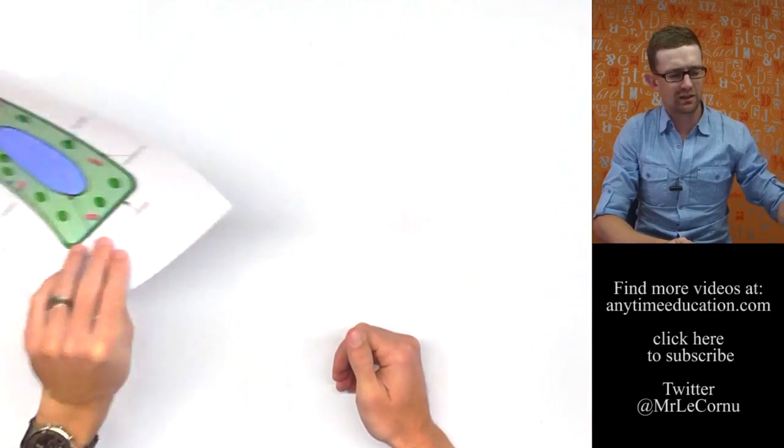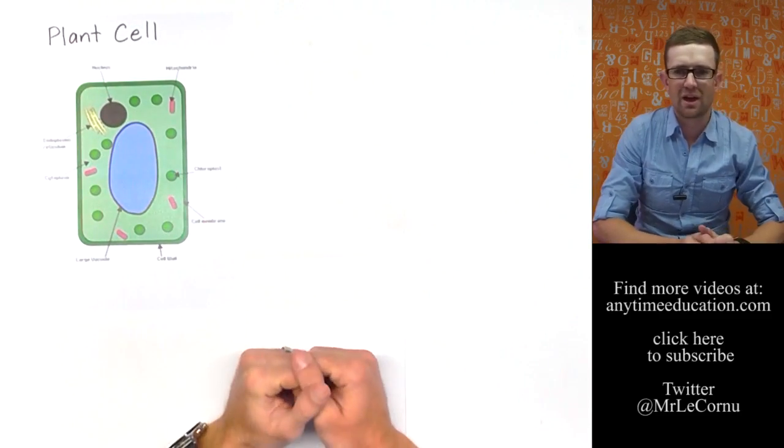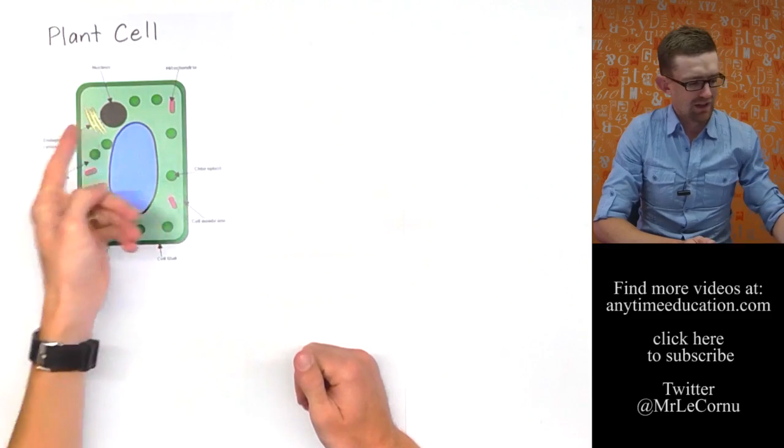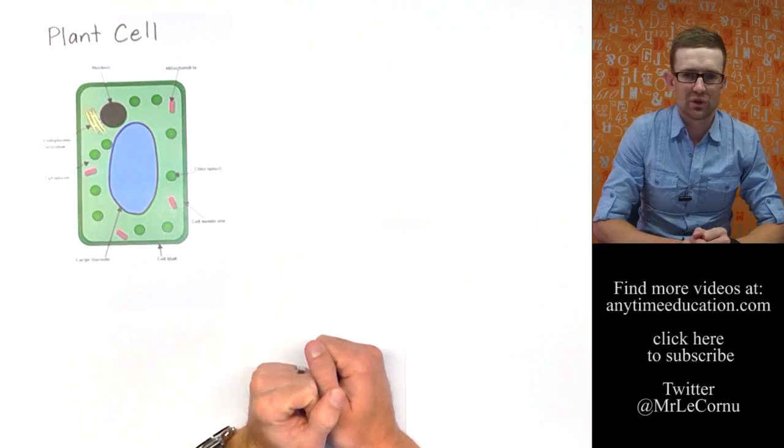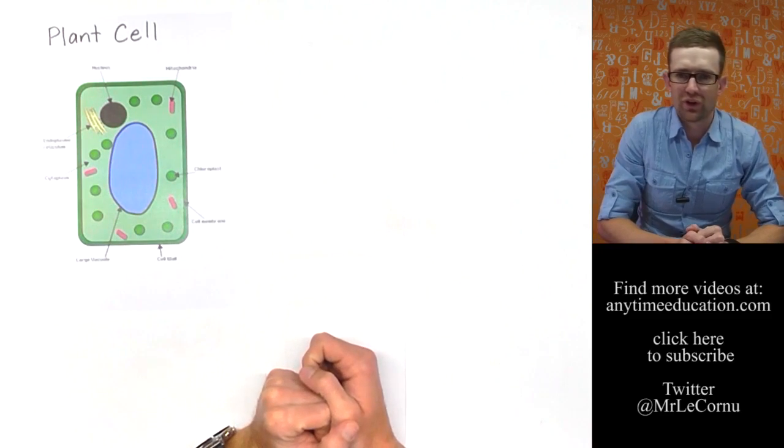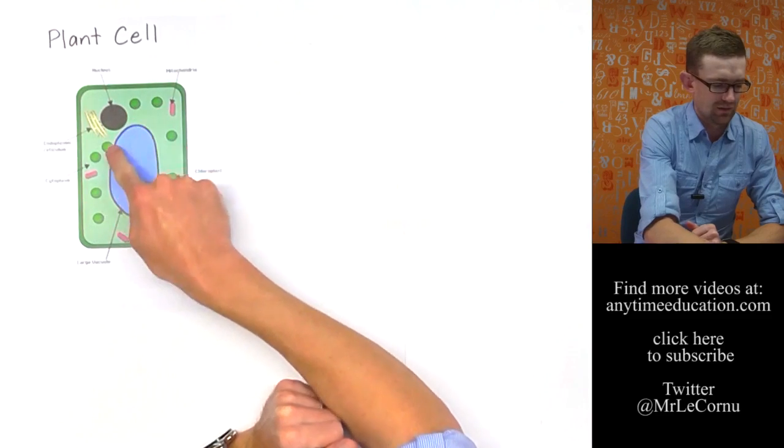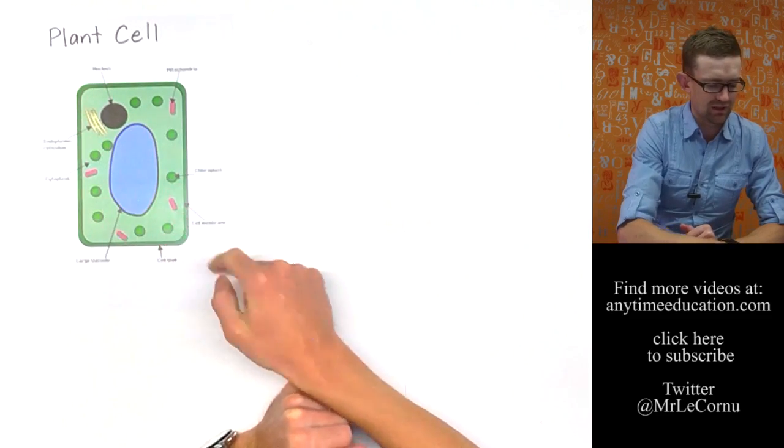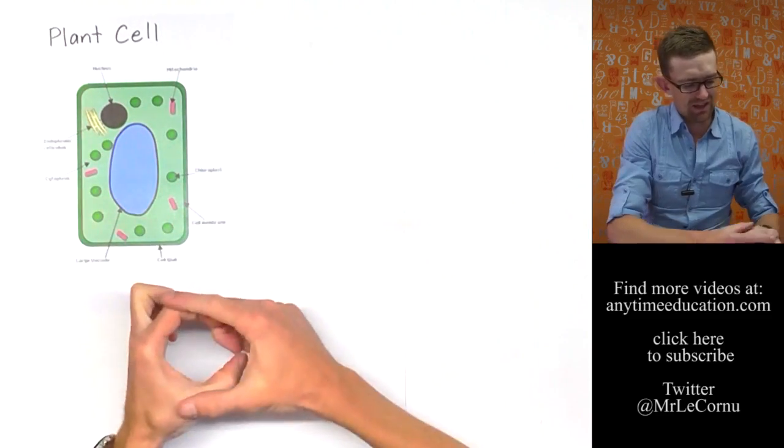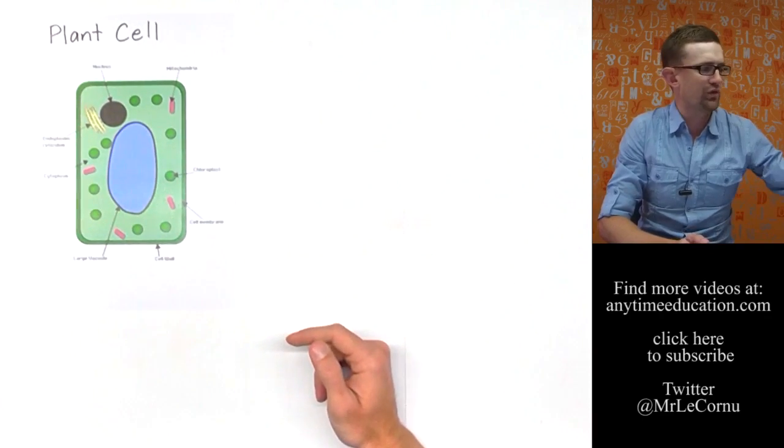All right so let's have a look at a plant cell. Here we have a plant cell. Very basic diagram of one. It has a range of different organelles which we're already familiar with. The one that we're going to focus on for photosynthesis is of course chloroplasts. There's lots of chloroplasts through this plant cell. They're not really that circle shape which they appear to be in this diagram. They're more of an oval.